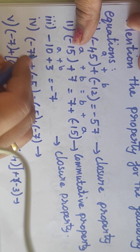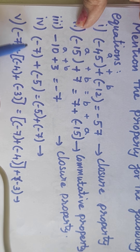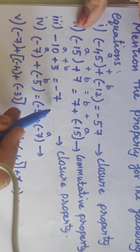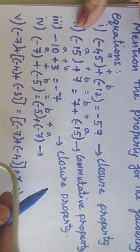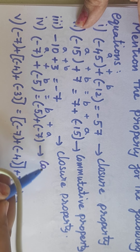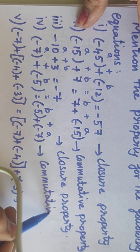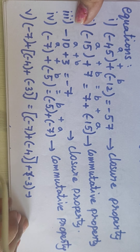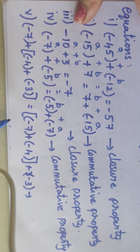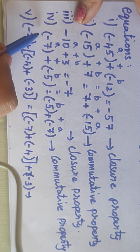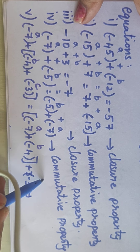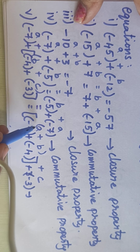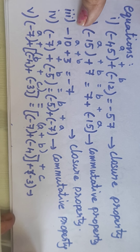Third one: (-10) + 3 — name it A and B — the property name is closure property. Next, two-digit: (-7) + (-5) equals (-5) + (-7). Here minus 7 is A and minus 5 is B, giving A plus B equals B plus A — commutative property. Next, three-digit: (-7) + (-4) + (-3) equals (-7) + (-4) + (-3). Name it A, B, C on both sides. A plus (B plus C) equals (A plus B) plus C — associative property.